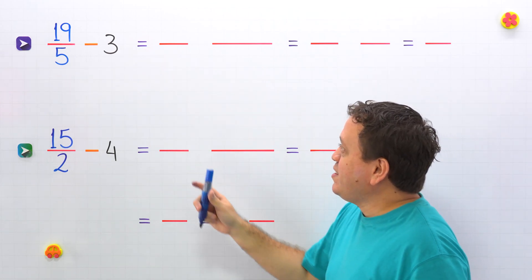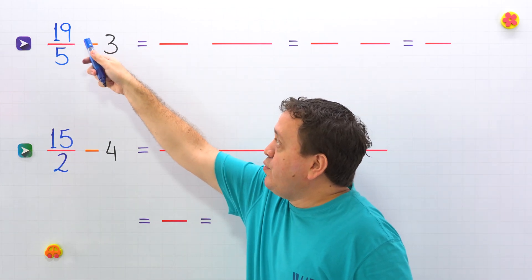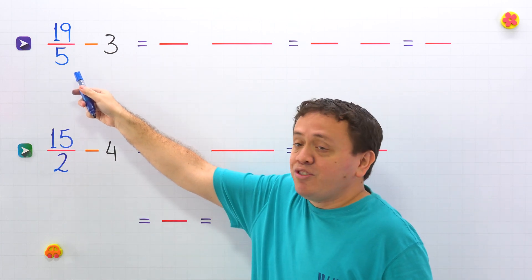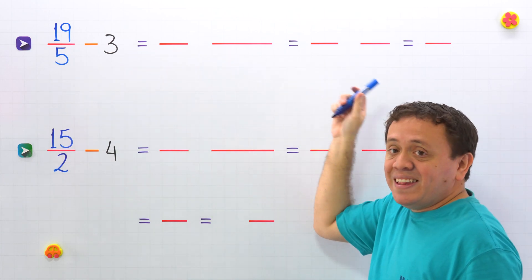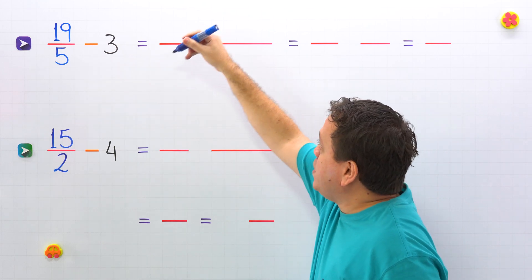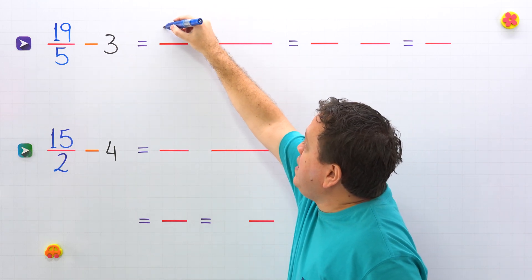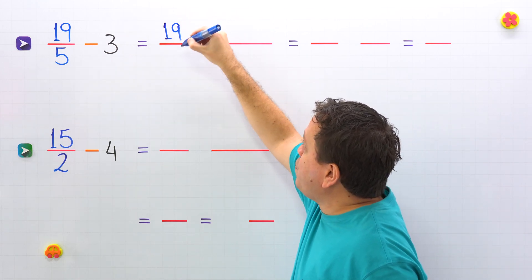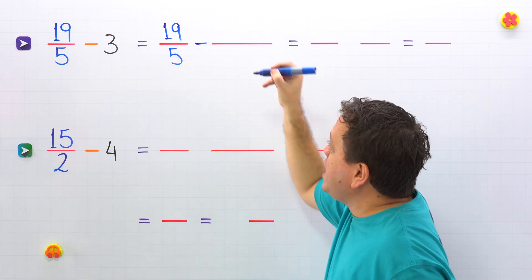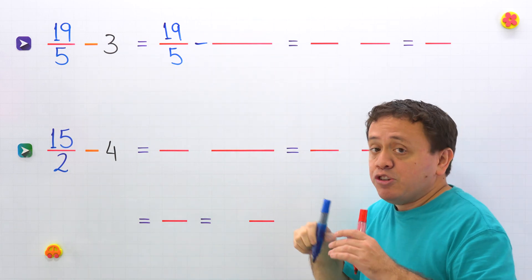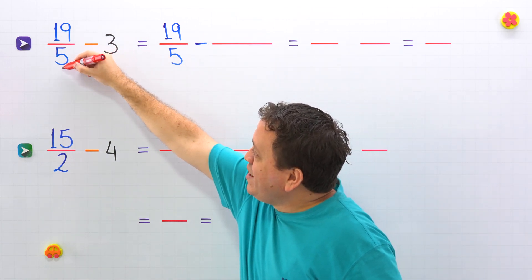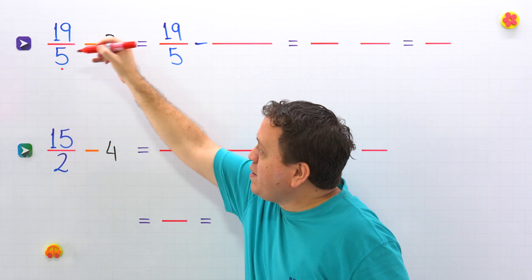Are you ready for the first example? In this example, we need to subtract 19 fifths minus 3. As you can see, we have a fraction and a whole number. To find the difference, pay attention — the key to solve this problem is to focus on the denominator of the fraction, 5 in this case.